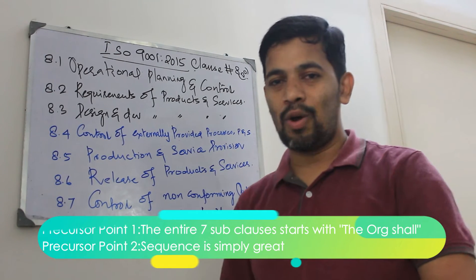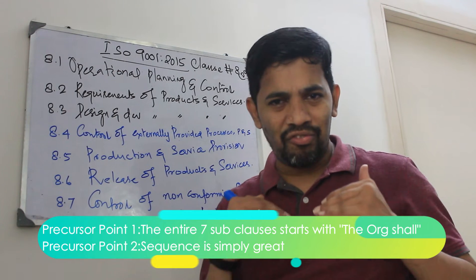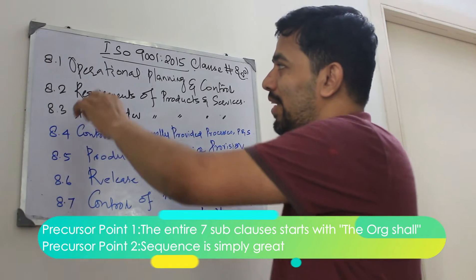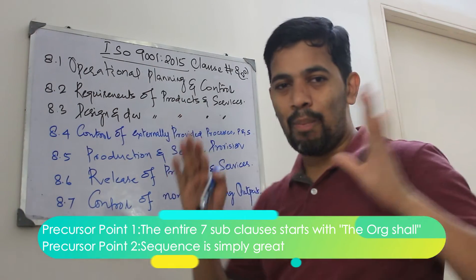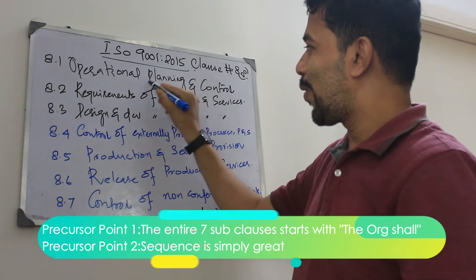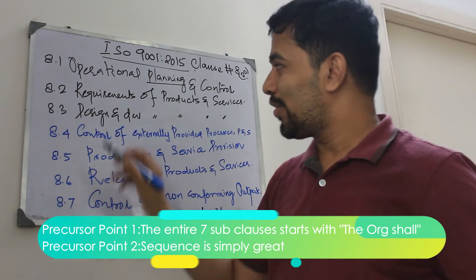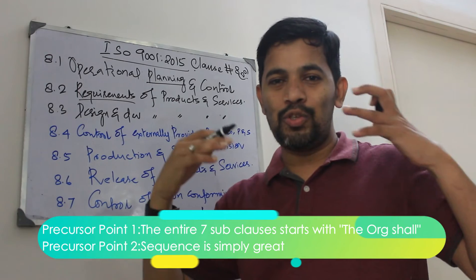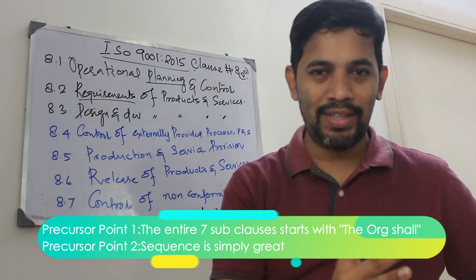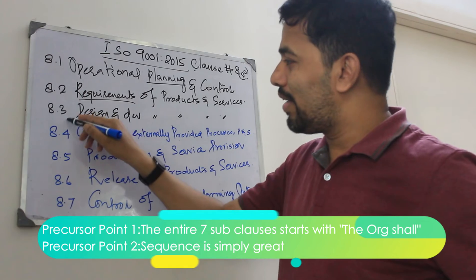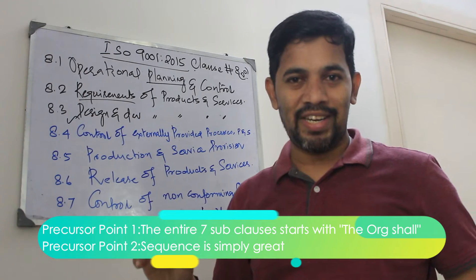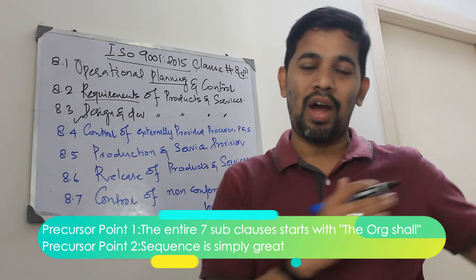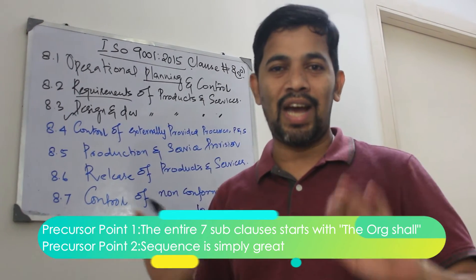Next, all 7 subclasses have a very deep sequence in order. For example, when you say operation, first thing that is important is planning. After planning, requirement gathering is important. Once you have great planning and requirements gathered, you go and develop it — design and development.